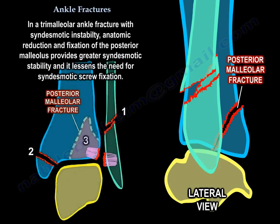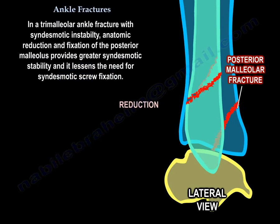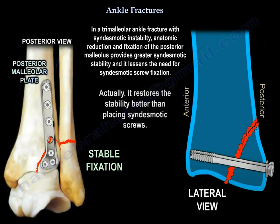In a trimalleolar ankle fracture with syndesmotic instability, anatomic reduction and fixation of the posterior malleolus provides greater syndesmotic stability and lessens the need for syndesmotic screw fixation. Actually, it restores stability better than placing syndesmotic screws.